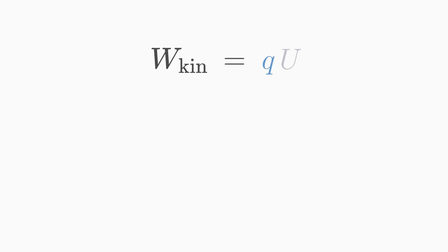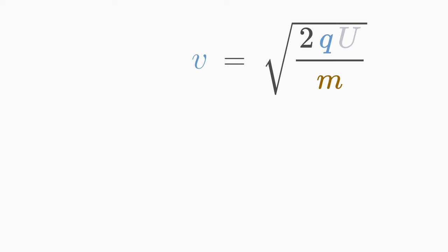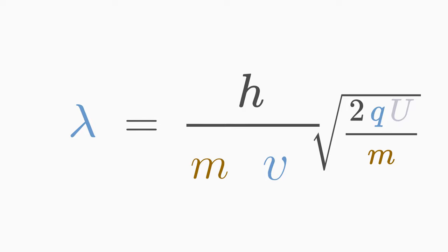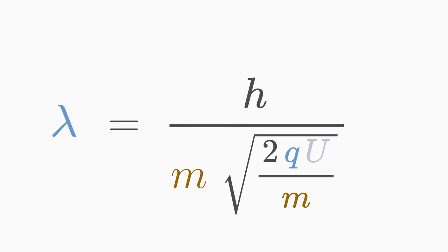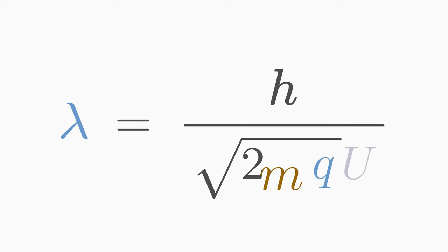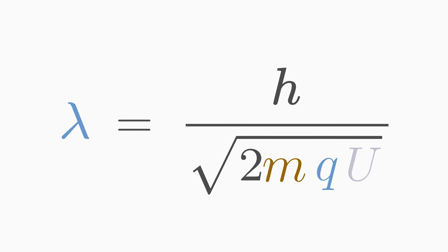We equate this energy with a classical formula for kinetic energy one half times mv squared. Let's rearrange the equation for v and use it to replace the unknown velocity in the de Broglie formula. The result is a formula for de Broglie wavelength that depends on voltage.